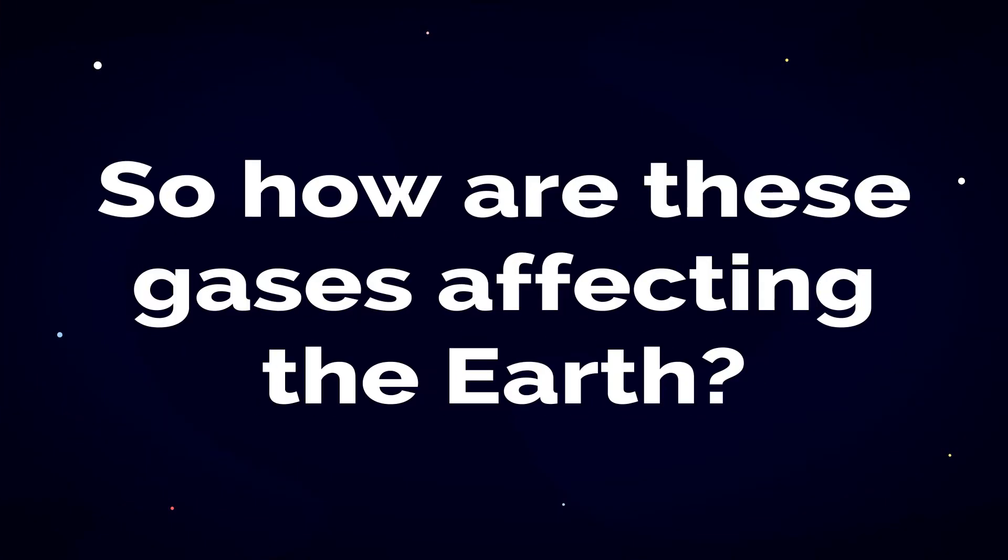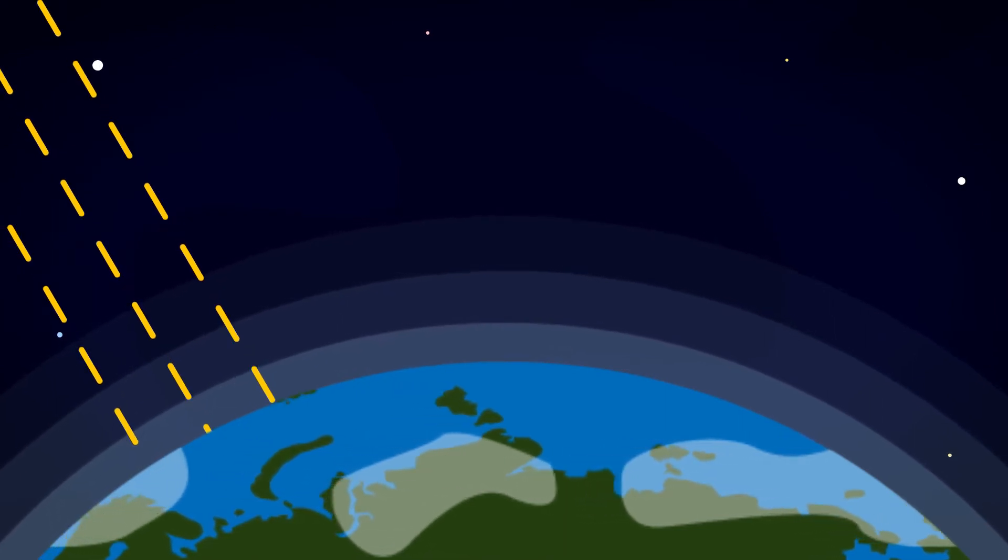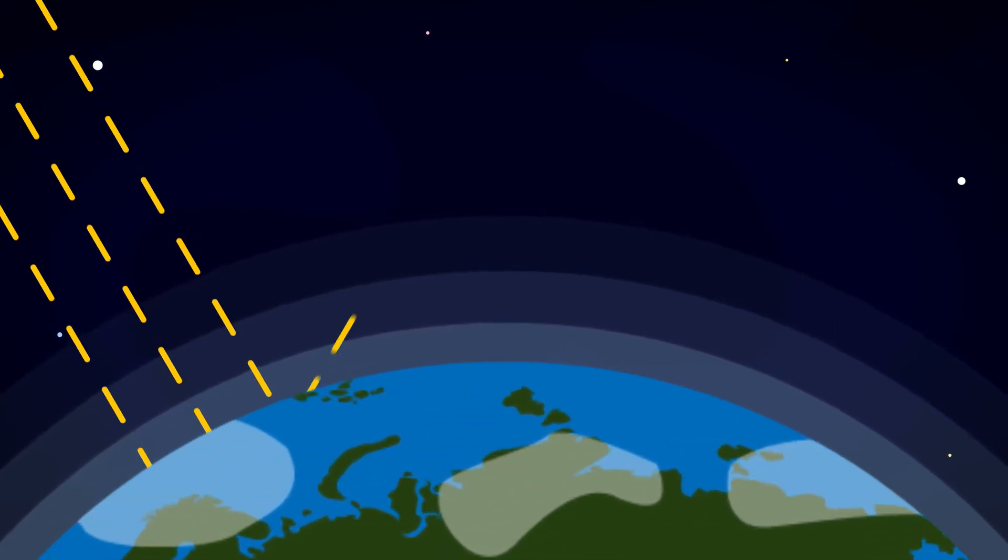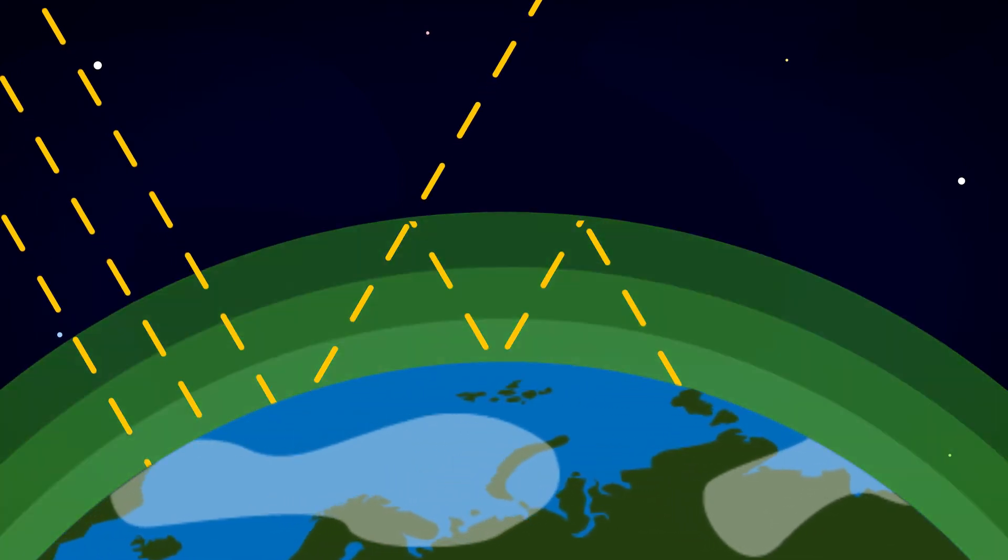So how are these gases affecting the Earth? As the sun's rays hit the Earth's surface, the Earth absorbs some of that energy. The rest of that energy gets radiated back into space, but most of it gets trapped in our atmosphere due to greenhouse gases.